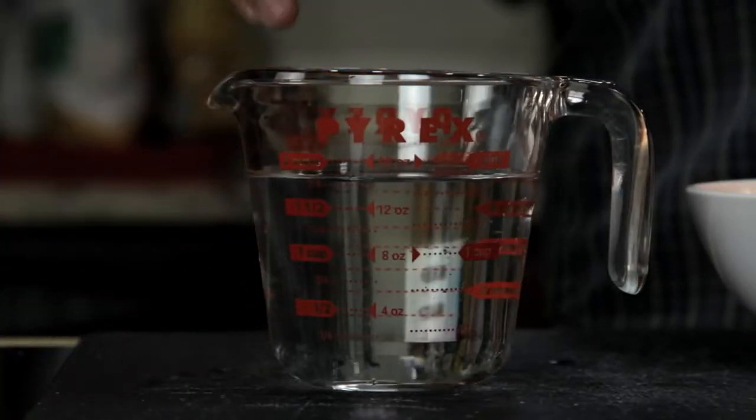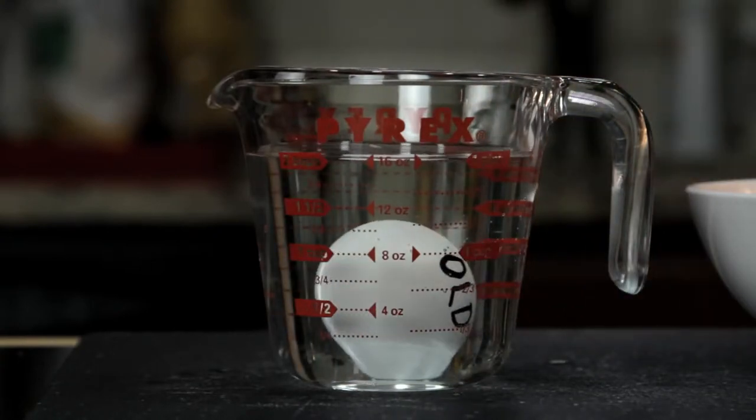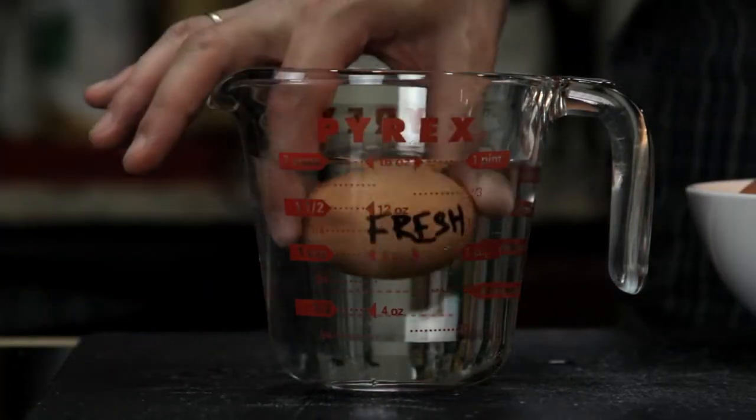You can also tell how fresh an egg is by carefully putting it into a cup of water. As an egg ages, the air pocket in the fat end is going to get bigger and bigger, which will make the egg stand upright, or sometimes even float. A really fresh egg will sink and lie flat on its back, like this.